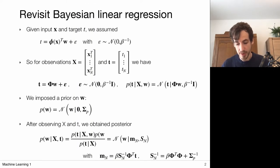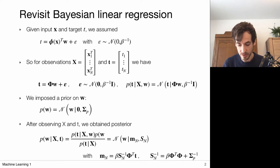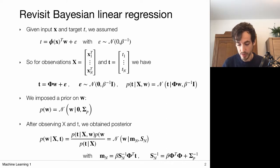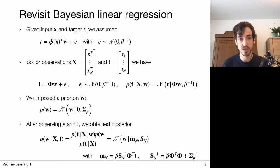The approach we took in our probabilistic linear regression case was that we assumed some true relation between an input x and a target t via a linear model. We could work with basis functions to make this mapping more interesting and complicated, but ultimately this model is parameterized by model parameters w. So we set out to recover this transformation parameterized by w, based on our observations.